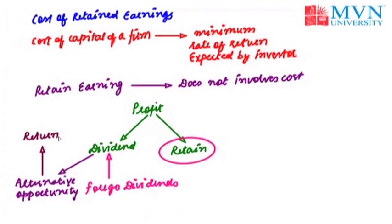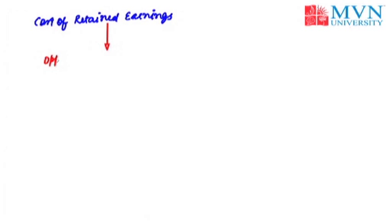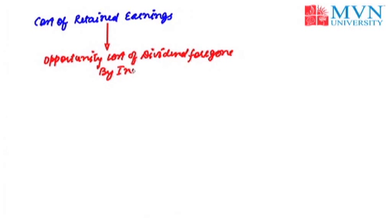Therefore, the cost of retained earnings may be considered as the rate of return which the existing shareholders can obtain by investing the after-tax dividend in alternative opportunities of equal quality. Thus, the cost of retained earnings can also be termed as the opportunity cost of dividends foregone by the investor. The cost of retained earnings will be calculated as the cost of equity share capital in the case of growth where the dividend grows with time.